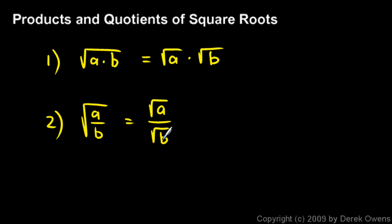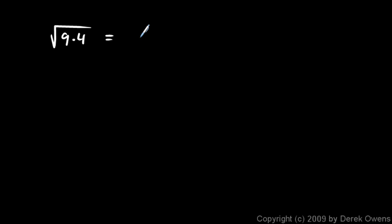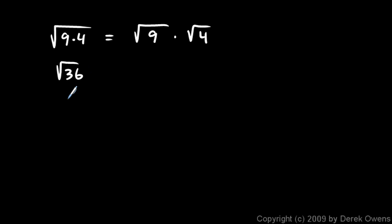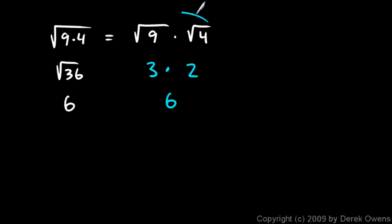We can see that these ideas are true by looking at a couple of examples. Let's look at the square root of 9 times 4. I'm claiming that will equal the square root of 9 times the square root of 4. Well, the square root of 9 times 4 is just the square root of 36, and we know the square root of 36 is 6. Over on the right side, the square root of 9 is 3, and the square root of 4 is 2. And 3 times 2 is 6. Those are equal to each other.